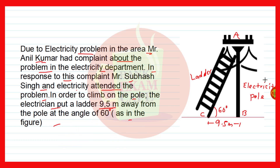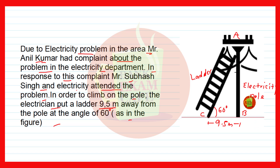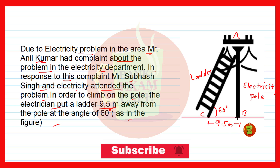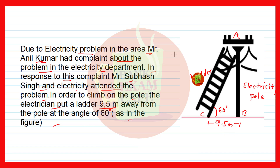Mr. Anil Kumar lodged a complaint with the electricity department and in response to that complaint, Mr. Subhash Singh attended and placed the ladder along the pole making an angle of 60 degrees with the ground, which is 9.5 meters away from the pole. So this distance is 9.5 meters, this angle is 60 degrees, and we have to answer the questions asked here.